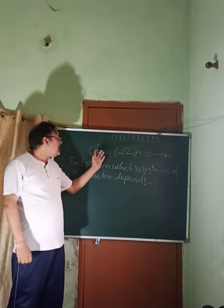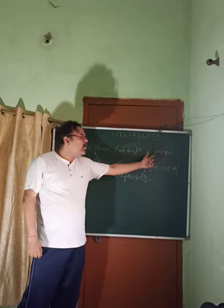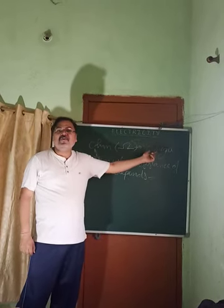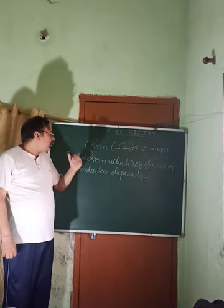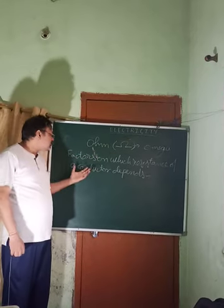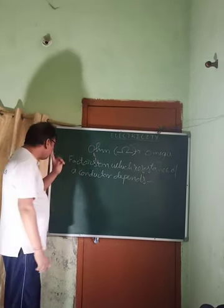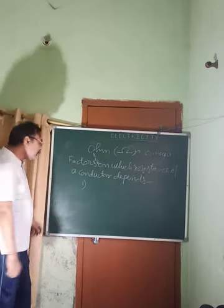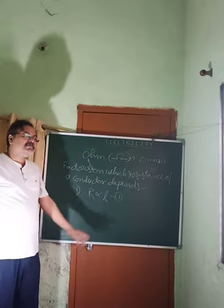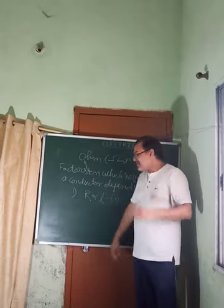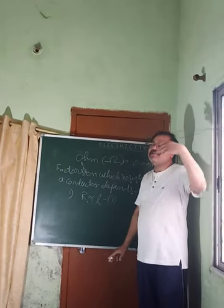Now we discuss the factors on which the resistance of a conductor depends. First factor: if the conductor is very long, its resistance will be high; if it is very short, its resistance will be very low. So resistance is directly proportional to the length of the conductor — more the length, more the resistance; less the length, less the resistance.